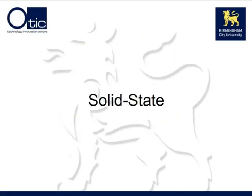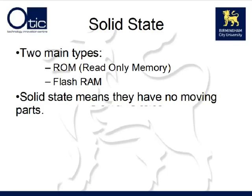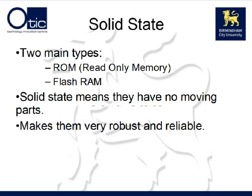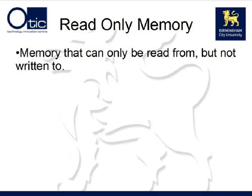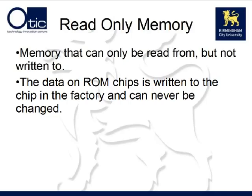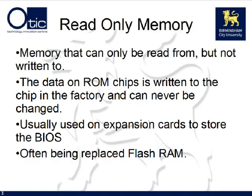The final type of storage technology we'll look at is solid state. There are two main types of solid state storage: read-only memory or ROM, and flash RAM. The term solid state refers to the fact that they have no moving parts at all, making this a very reliable and robust technology. Both types rely on a variety of transistor-based technologies. Read-only memory is memory that can be read from but not written to — the data is written to the ROM chip in the factory and can never be changed. Previously it was commonly used to store BIOS on expansion cards such as graphics cards, but as technology has advanced, this is being replaced by flash RAM in many cases.